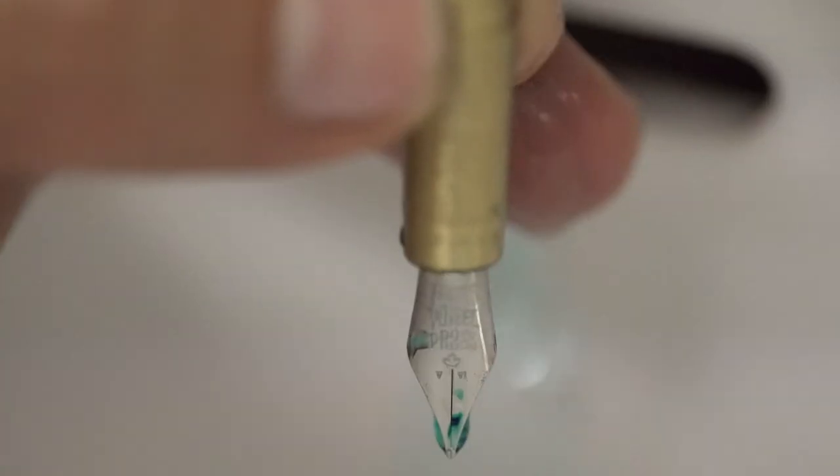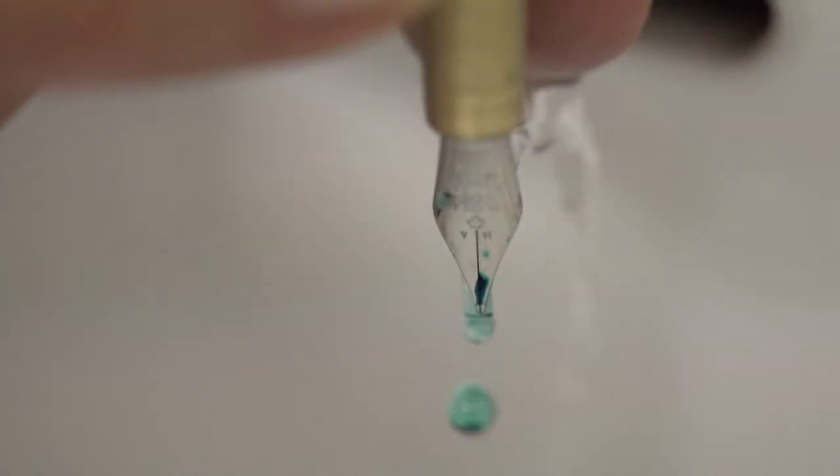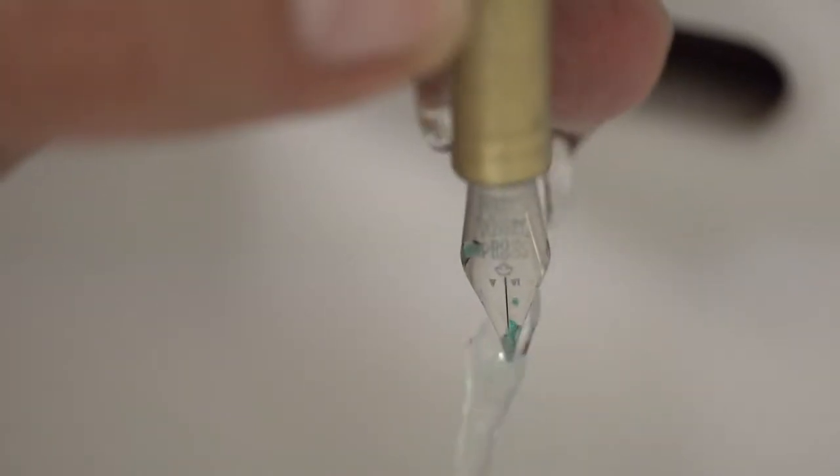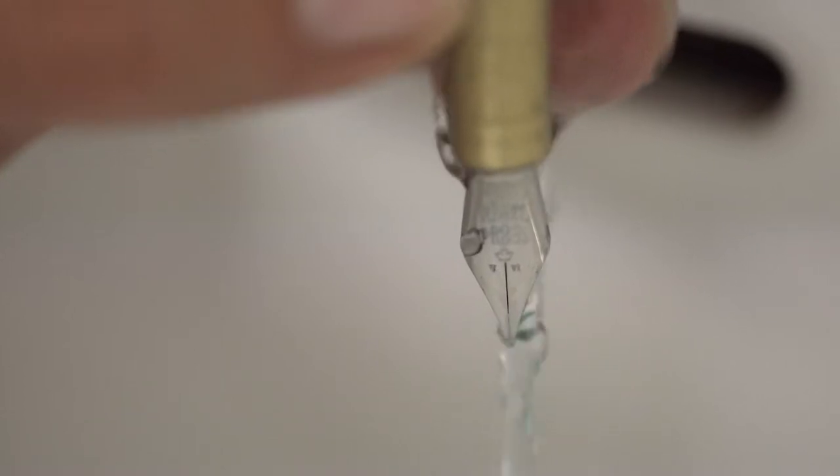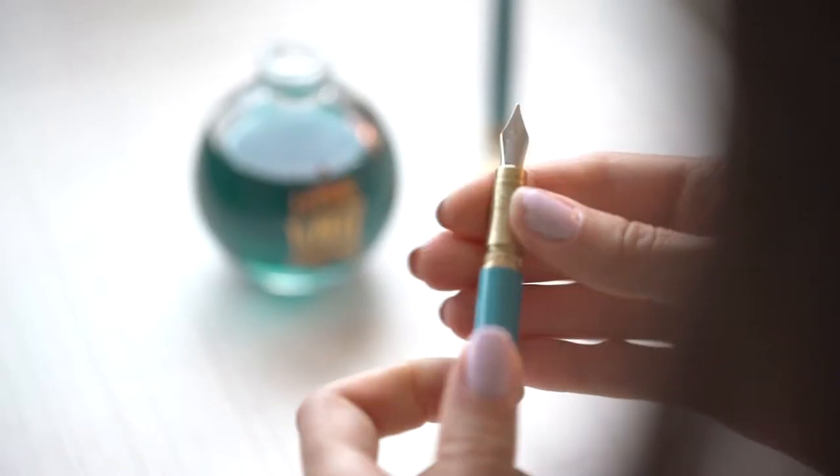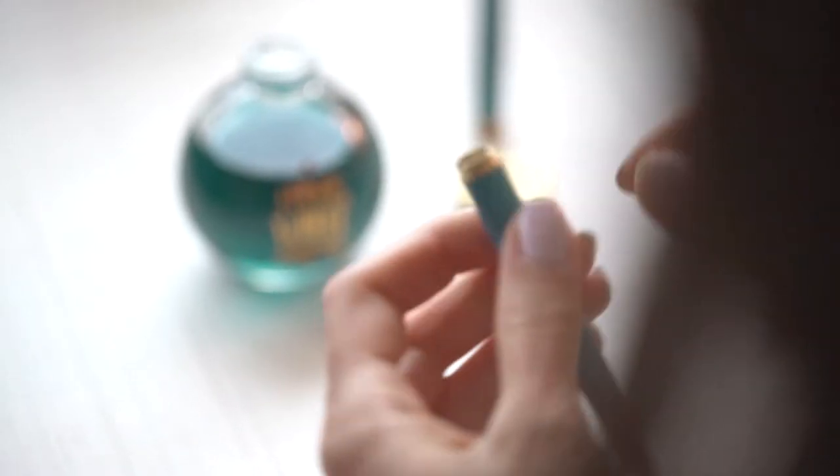Clean your nib and converter by rinsing it in cold water until water runs clear. If the pen has not been used for a few weeks, you may need to submerge the nib for an hour to loosen up the ink. Air dry the nib and converter and reassemble when fully dry.